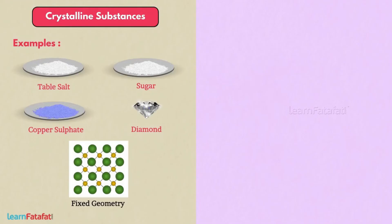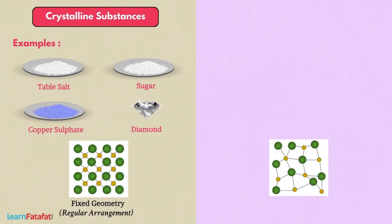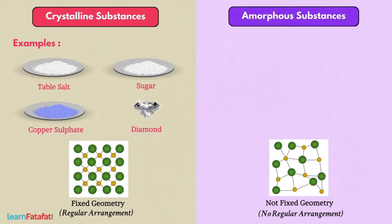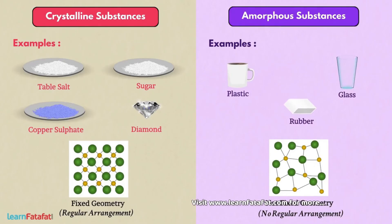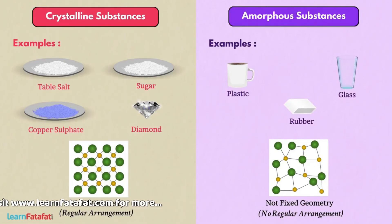They have a fixed geometry due to the regular arrangement of their constituents. There are other kinds of solids in which there is no regular arrangement of constituents, and so they do not give a fixed geometry. These are called amorphous substances. Examples are plastic, glass and rubber.